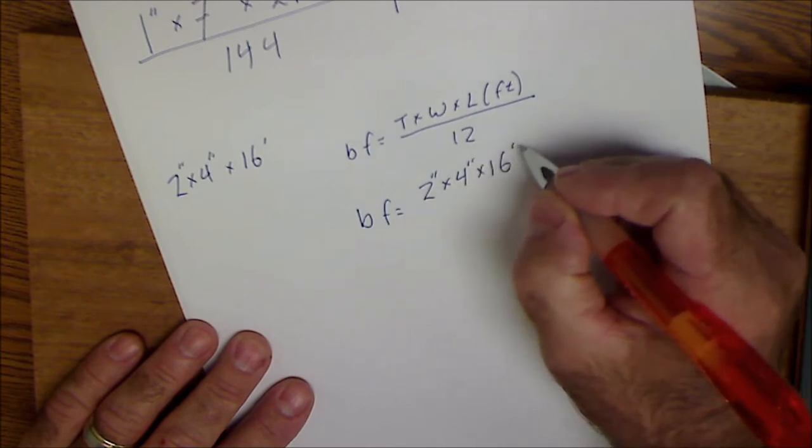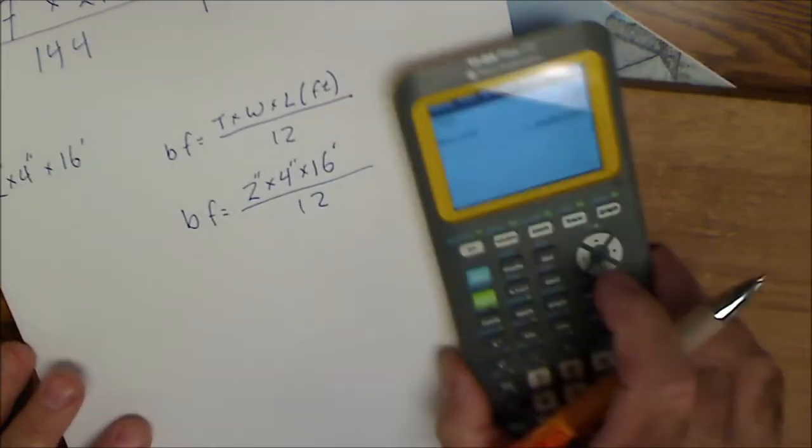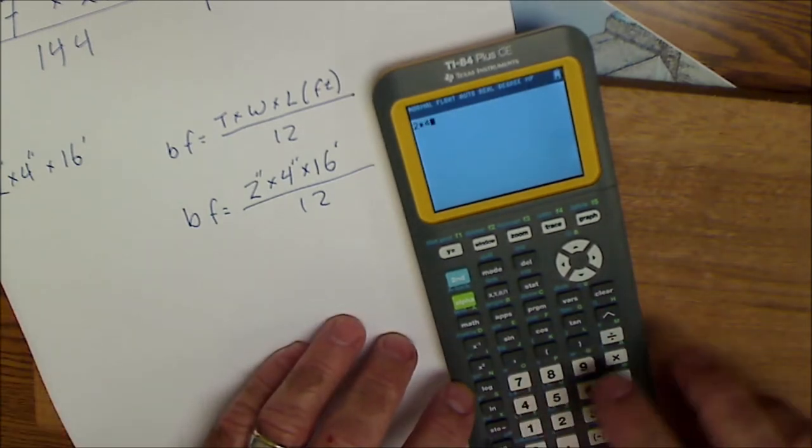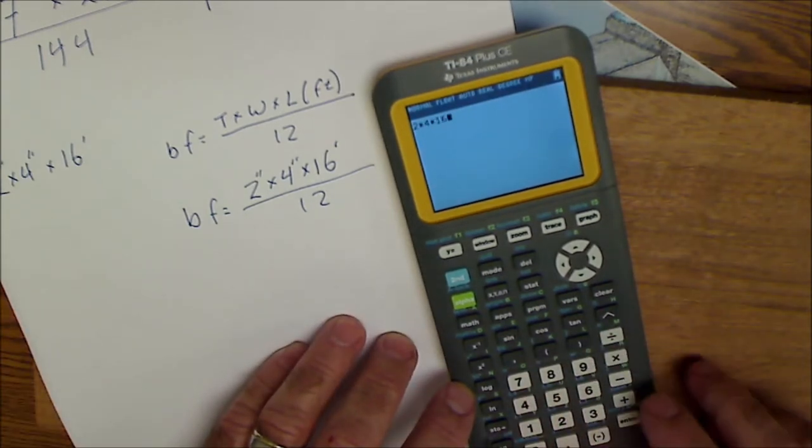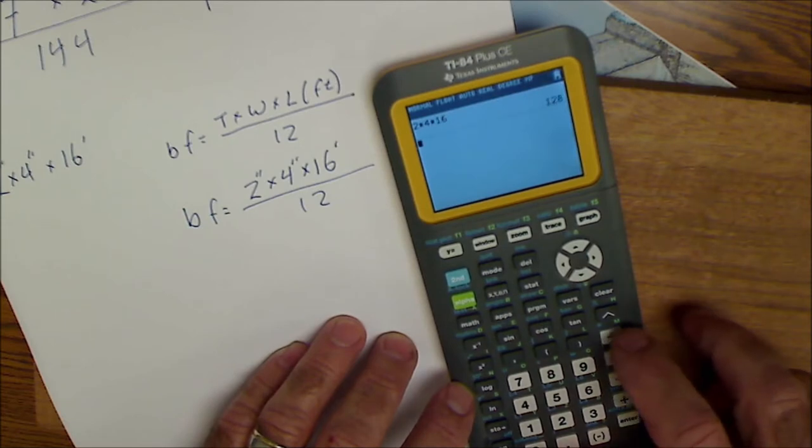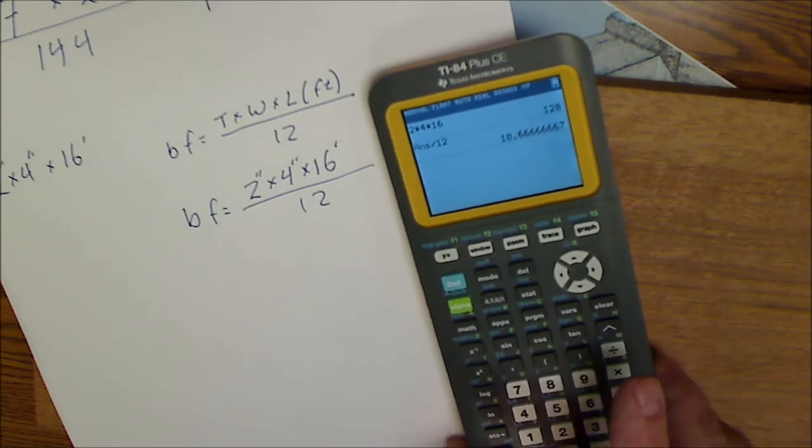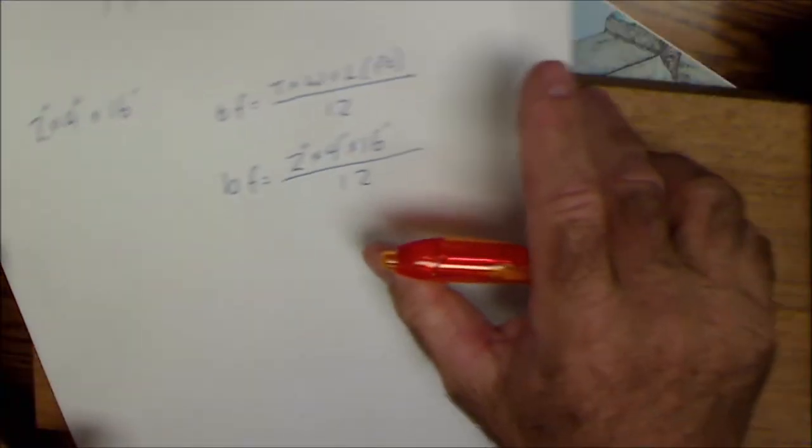I'll do that again on my calculator. I'll go two times four times 16 feet equals divided by 12. And I'll get 10.7 board feet or 11 board feet.